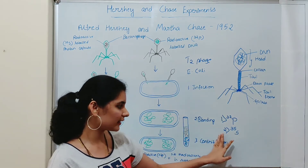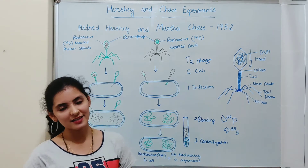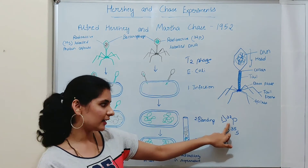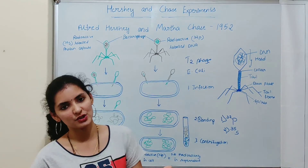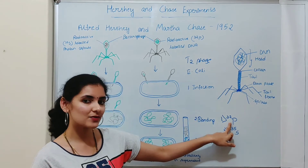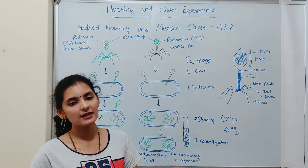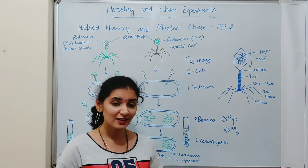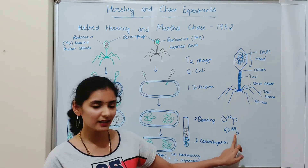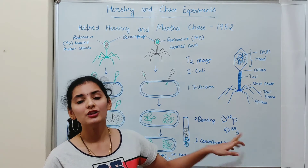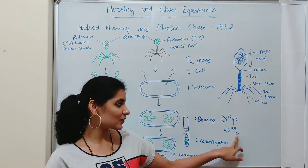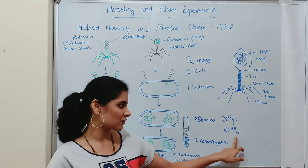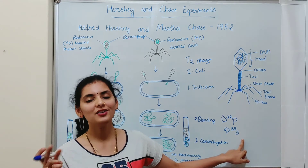With this basic idea, Hershey and Chase beautifully designed this experiment. When they grew T2 phage in a medium containing radioactive phosphorus, the DNA became radioactive because the radioactive phosphorus was incorporated into the DNA. As a result, the DNA was radioactive but the protein was non-radioactive. On the other hand, when bacteriophage was grown in a medium containing radioactive sulfur, the protein showed radioactivity because the radioactive sulfur was incorporated into the protein, but not the DNA.